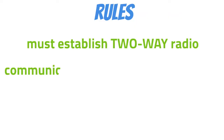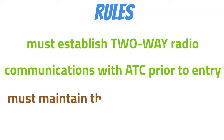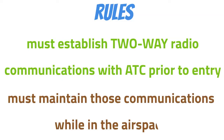Let's look at some of the rules we need to know before we can go into Class Delta. First, we must establish two-way radio communications with ATC prior to entry. Then we must maintain those communications while within that airspace. These rules look familiar — they're the exact same ones for Class Charlie airspace.